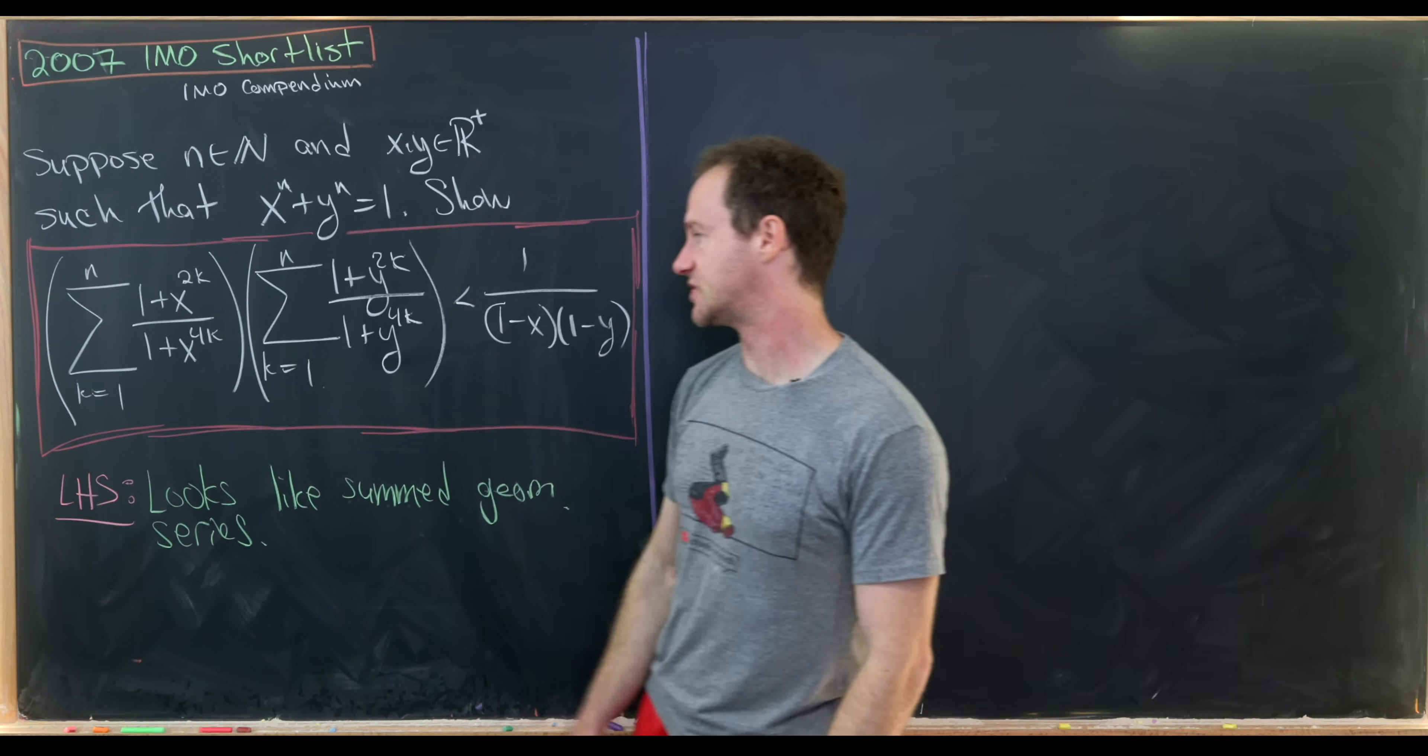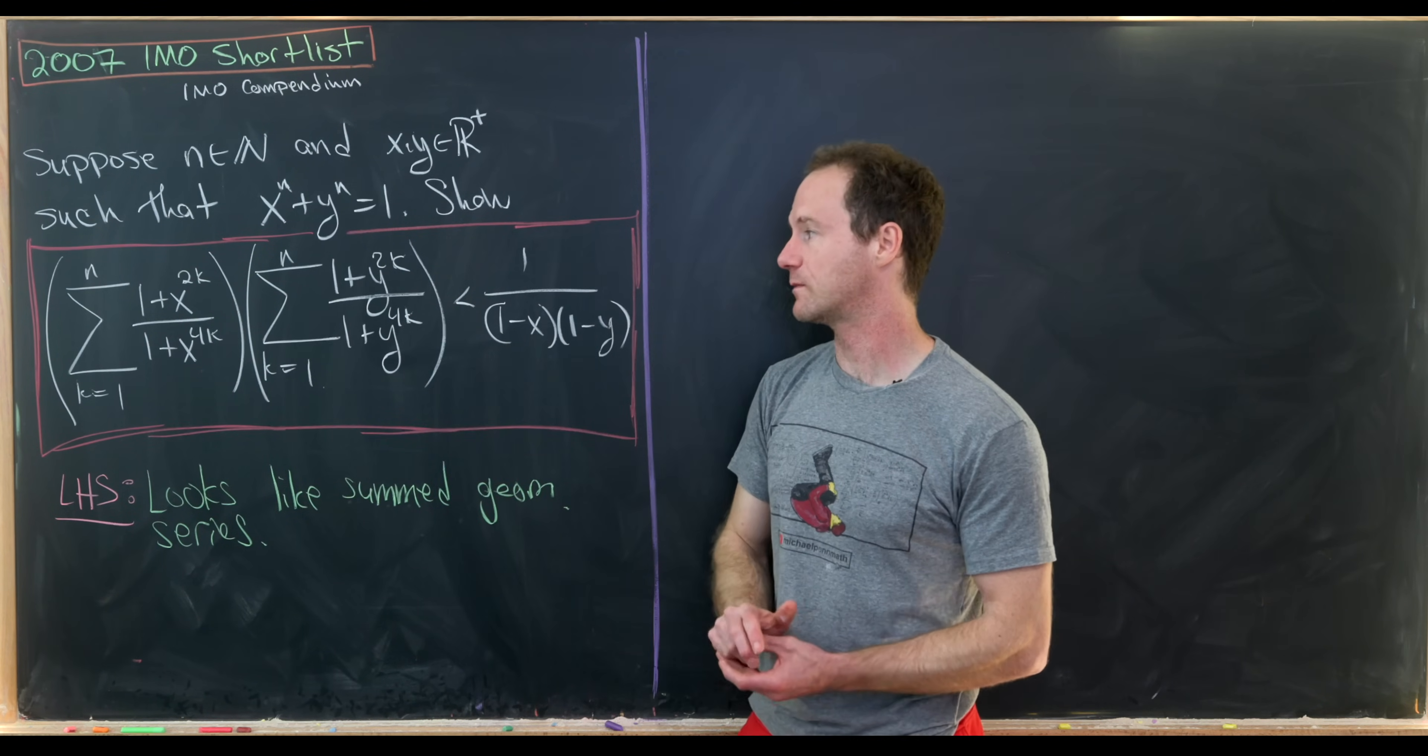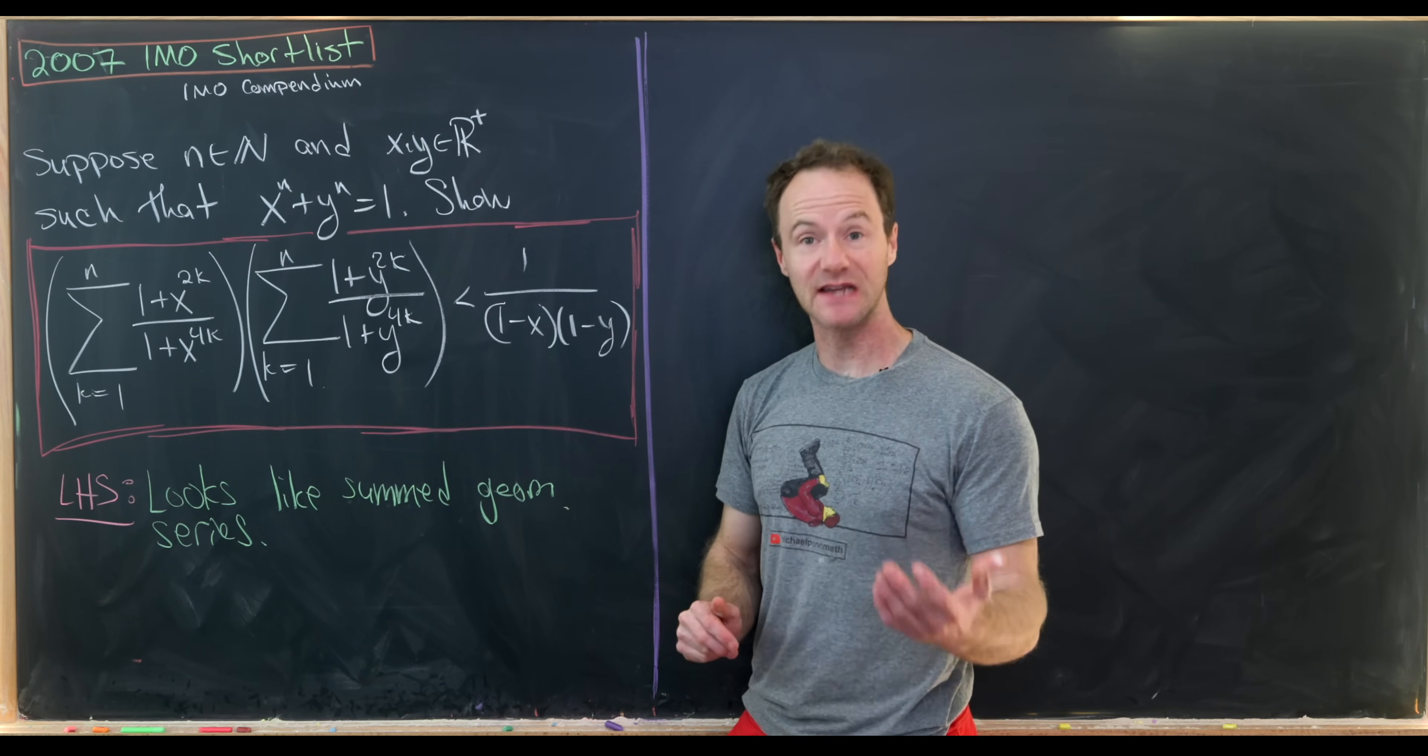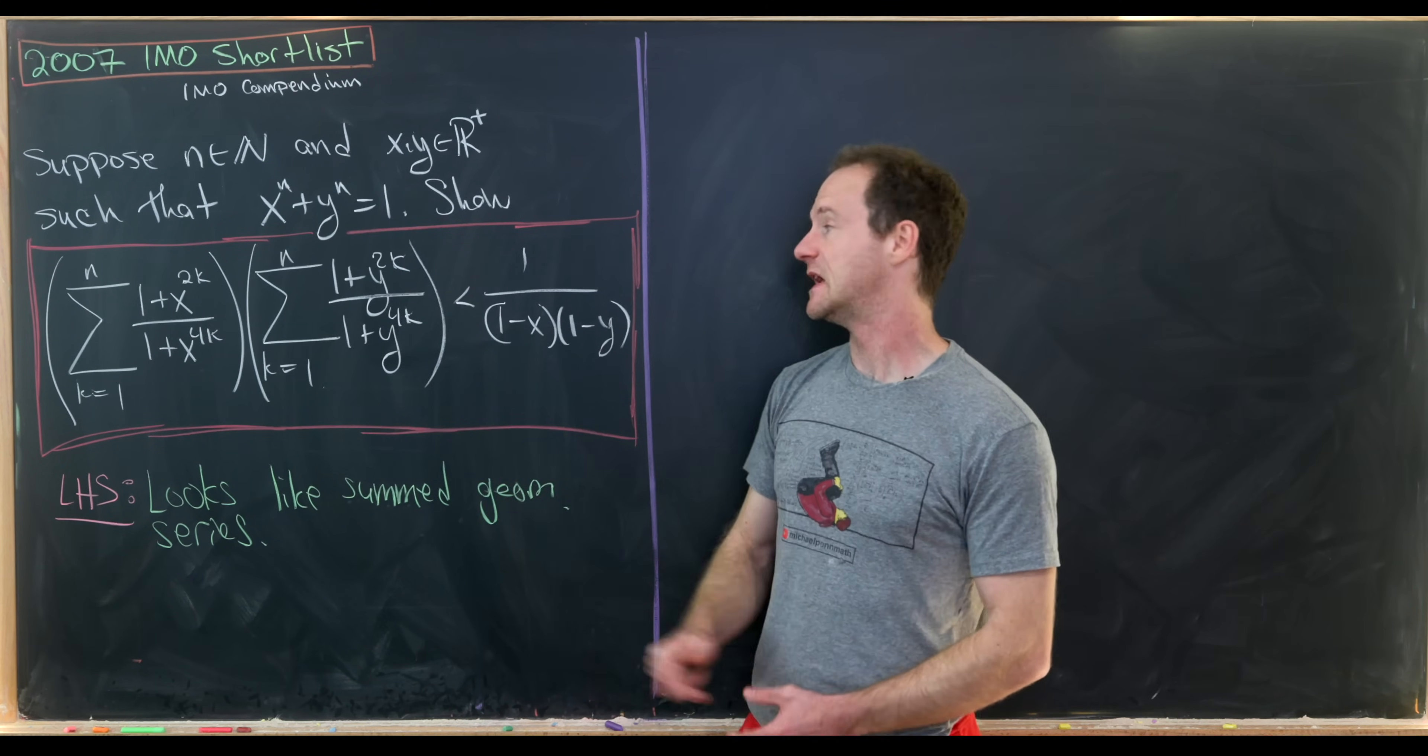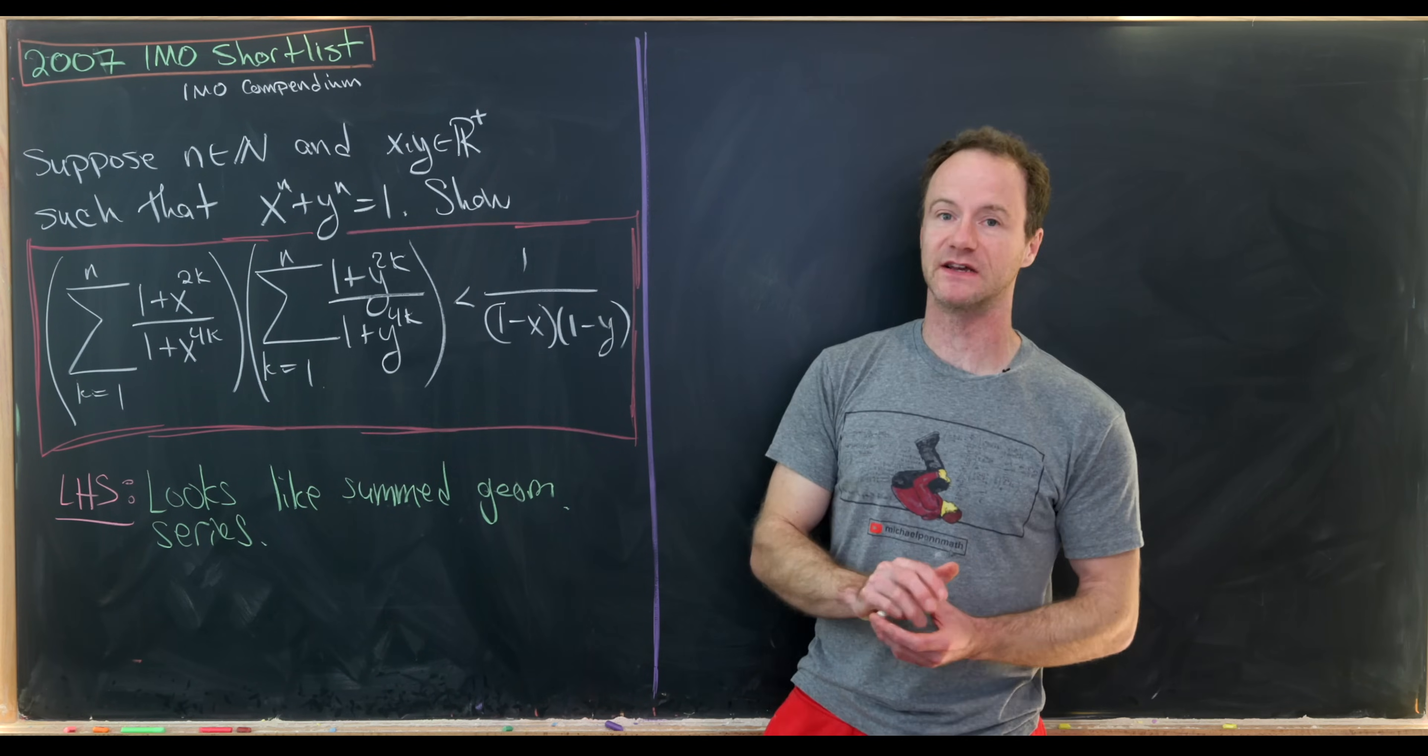Then our final goal is to show that the sum as k goes from 1 to n of (1 plus x to the 2k) over (1 plus x to the 4k) times the same sum where we've replaced x with y is less than 1 over (1 minus x) times (1 minus y).